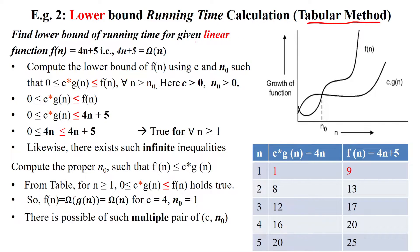This function can be asked like show that the given linear function 4n plus 5 equals big omega of n. Find out c and n₀ for this given function.